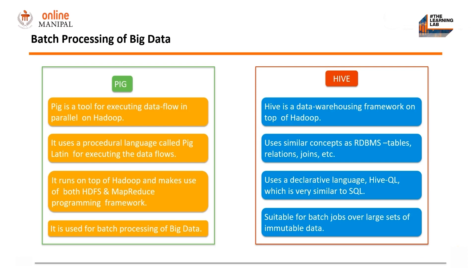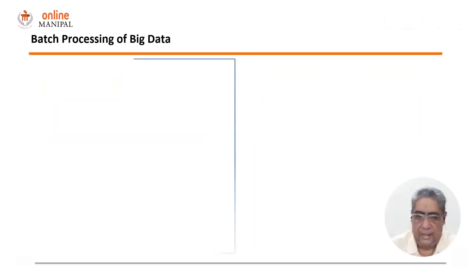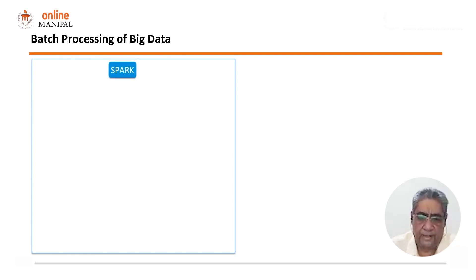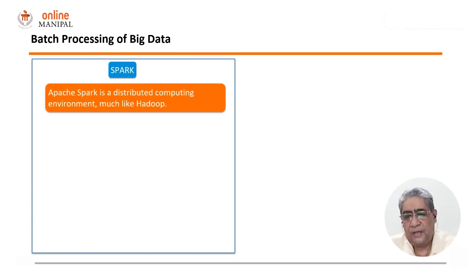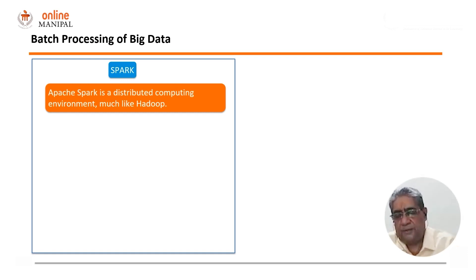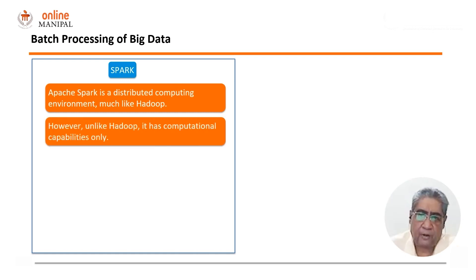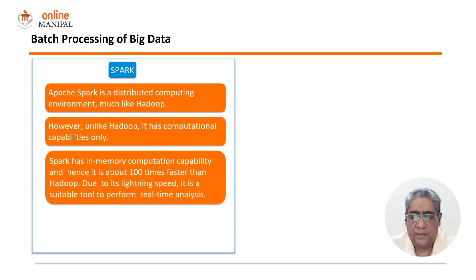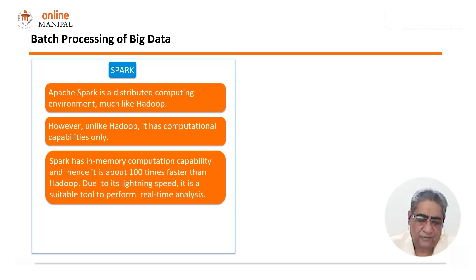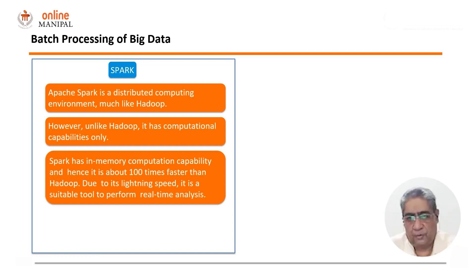Next we move on to real-time processing of big data. The de facto tool for doing that is Spark. Spark is basically a distributed environment on top of Hadoop. One thing that distinguishes Spark from Hadoop is that Spark has only computational capabilities — it has no storage capabilities like Hadoop. However, Spark has in-memory computation capability and hence it is almost 100 times faster than Hadoop while processing data. That is the reason why Spark is so suited for real-time processing of big data.